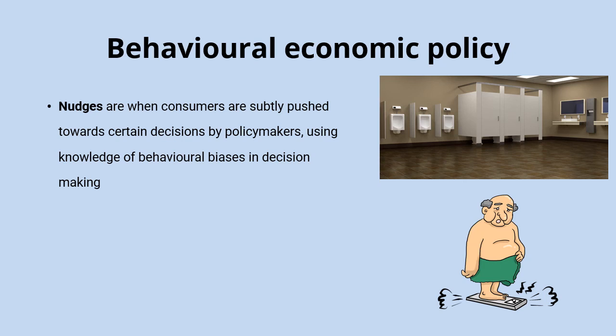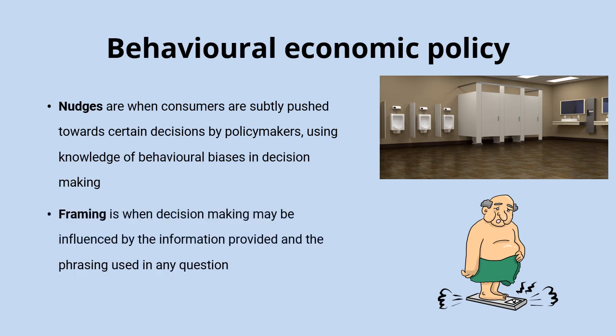Nudges subtly push consumers towards certain decisions using knowledge of these behavioural biases. There are huge numbers of examples across different policy areas and industries. My personal favourite is a bit of a silly one — a picture of a fly in the centre of urinals in public toilets. There's no rational justification for it, but people tend to aim for it, which reduces spill and means less cleaning is required — a really cheap and easy way of cutting cleaning costs.